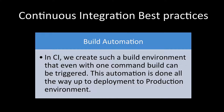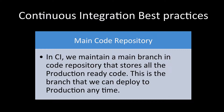First is build automation. In CI, we create a build environment where even with one command a build can be triggered. That is the level of automation required, and this goes all the way up to deployment to the production environment. Using different options in the same command, you can not only integrate, build, and test, but also deploy to production.